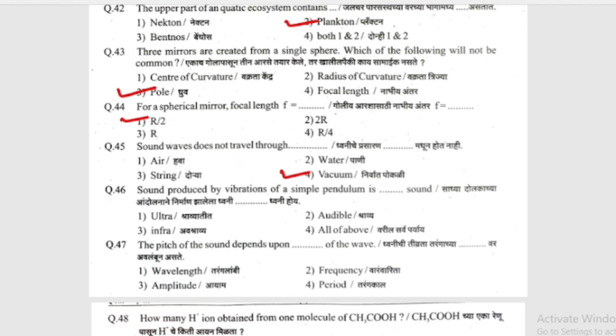Sound produced by vibrations of a simple pendulum is what type of sound? (Saadhya dolokachya andolanane nirmaan jhalela dhvani timba timba dhvani hoi.) Options: infrasonic, supersonic, or ultrasonic.